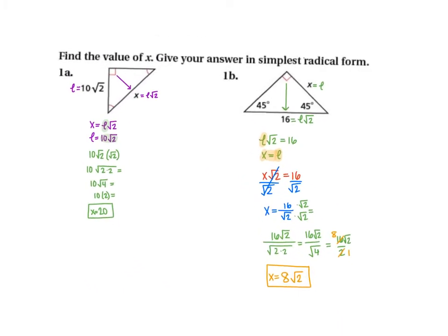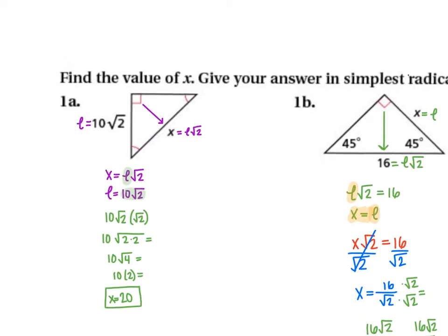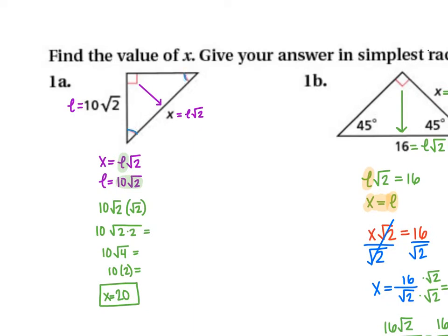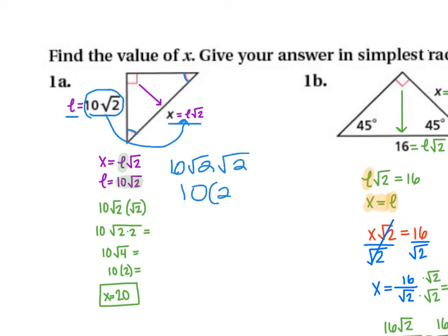In example 1A, the two angles are marked congruent, so both must be 45°. The legs are L and the hypotenuse is L√2. This time L is known, so plug it into L√2: L is 10√2, and 10√2 · √2 = 10 · 2 = 20. That's the remaining side length.